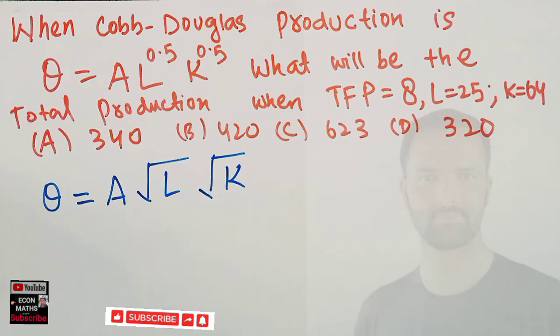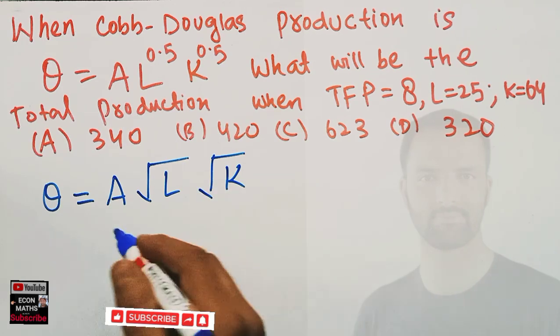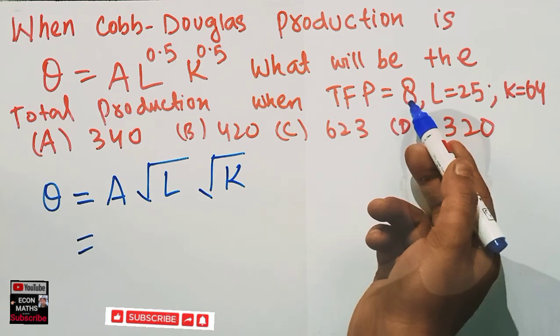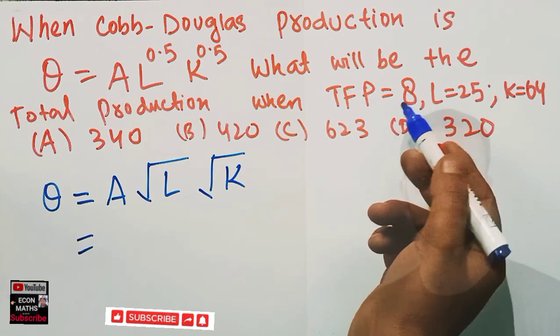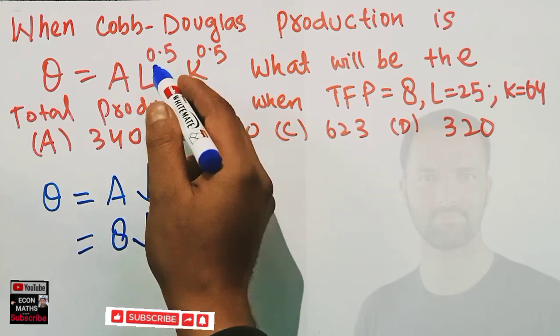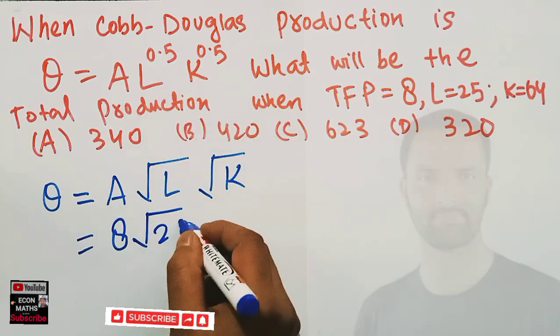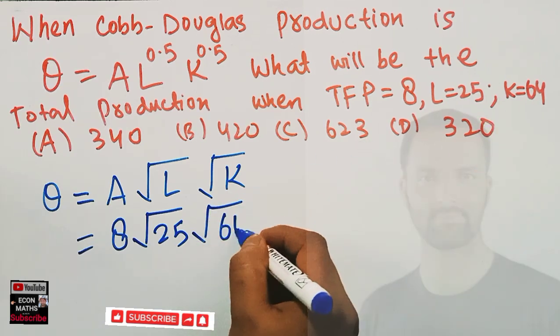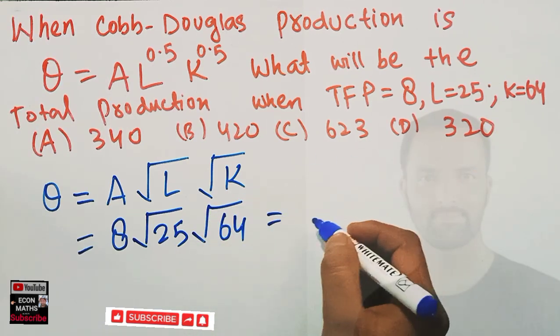the square root of K. This is our production function. Let's substitute the values: TFP is 8, so Q = 8 × √L × √K, where L = 25 and K = 64. If we solve this, it becomes